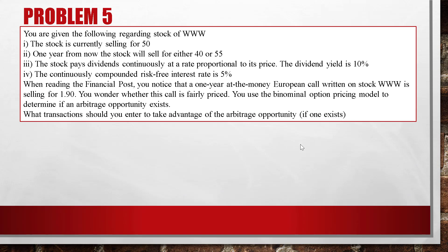Problem 5. You are given the following for stock www: the stock is currently selling for 50, one year from now the stock will be either 40 or 55, the stock pays dividends continuously at a rate proportional to its price with a dividend yield of 10%, and the continuously compounded risk-free interest rate is 5%. A one-year at-the-money European call on the stock is selling for 1.9. Determine whether this call is fairly priced and what transactions to enter if an arbitrage opportunity exists.